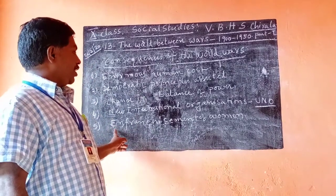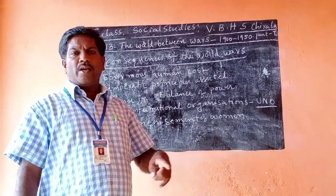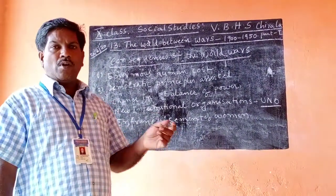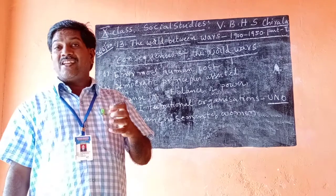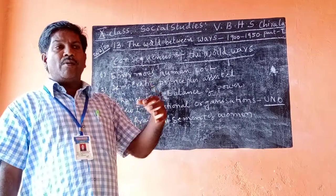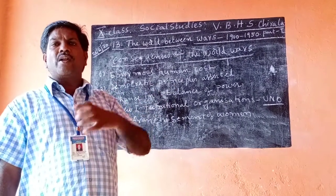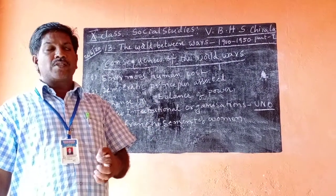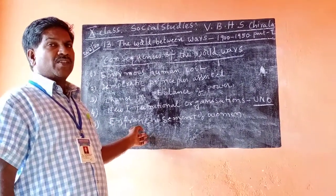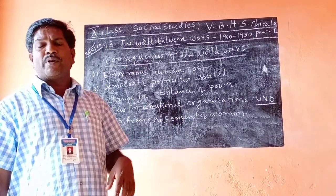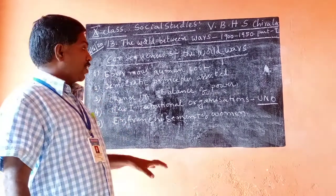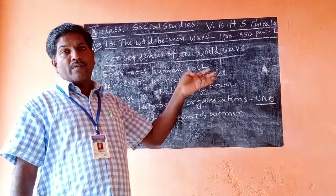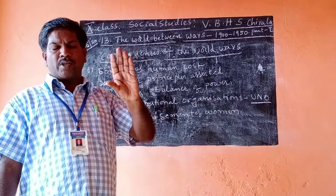The fifth consequence: enfranchisement of women. From the textbook's point of view, British women got the right to vote in 1918. By fighting, they secured political rights as well as financial powers in 1918. The women's suffragist movement also happened in 1914. These are all the important things we discussed — the consequences of the world wars, and what happened after the end of the world wars.